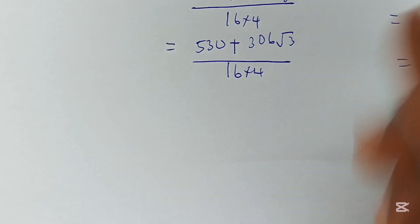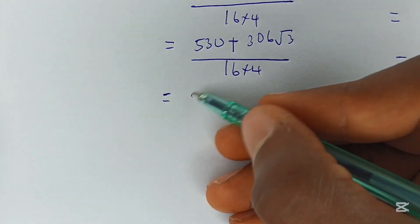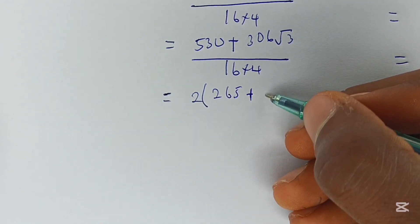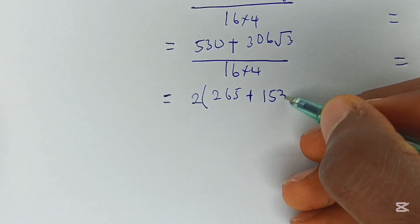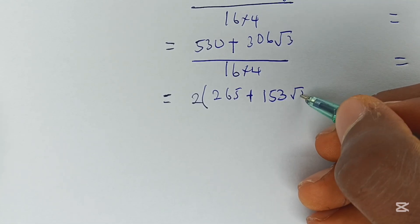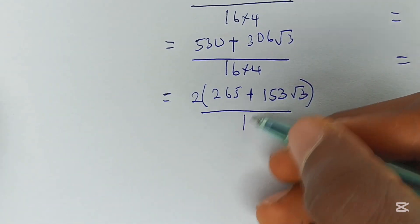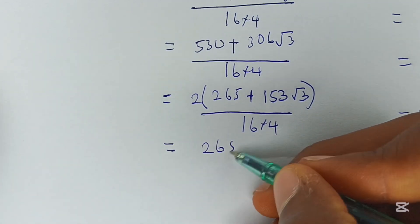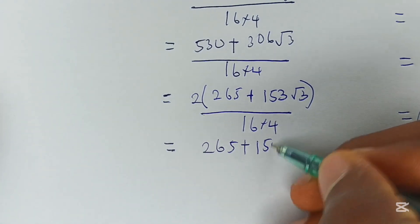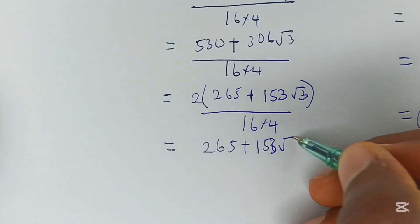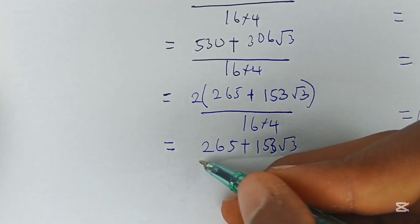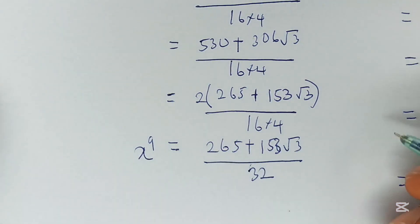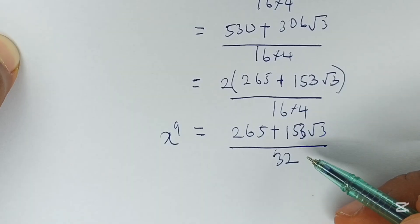This simplifies to (265 + 153√3)/32. Therefore, x⁹ = (265 + 153√3)/32. Thanks for watching.